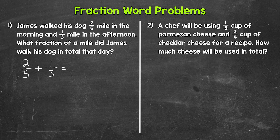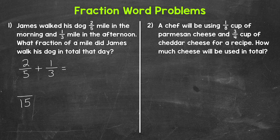Taking a look at this problem, we do not have a common denominator, so we need to find one in order to add. We need a common denominator for five and three in order to add these fractions. Fifteen is going to be the lowest common denominator here between five and three. So let's rename these fractions with that common denominator of 15. Remember, these are going to be equivalent fractions once we rename, so we're not changing the value of our original fractions.